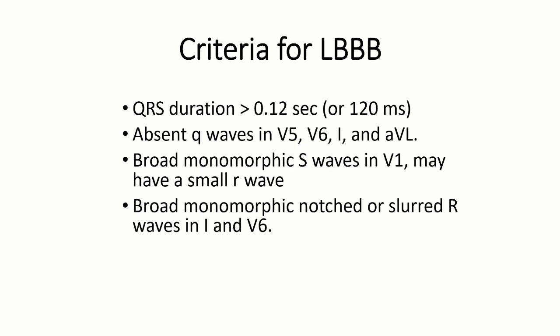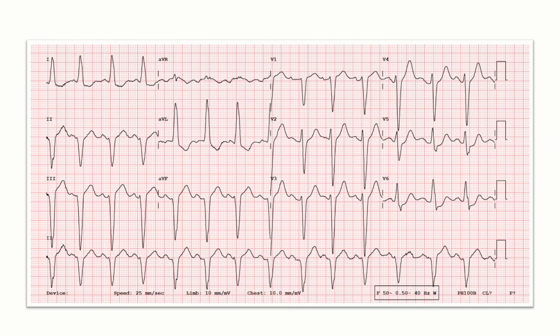Second, small Q waves which are normally present in lateral leads would be absent in case of left bundle branch block. Third, V1 would show monomorphic large S waves; however, sometimes a small R wave may also be seen before the larger S wave. Fourth and final criteria is that lateral leads will show broad monomorphic notched or slurred R waves.